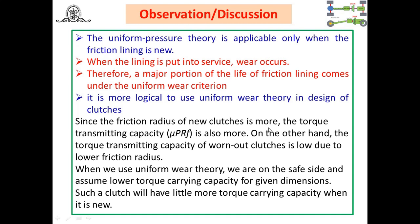The friction radius of new clutches is more, so torque transmitting capacity is also more. On the other hand, torque transmitting capacity of worn-out clutches is lower due to lower friction radius. When we use uniform wear theory, we are on the safe side — we assume lower torque carrying capacity for the given dimensions. Such a clutch will have slightly more torque carrying capacity when new, but the design gives correct results and keeps you on the safer side.